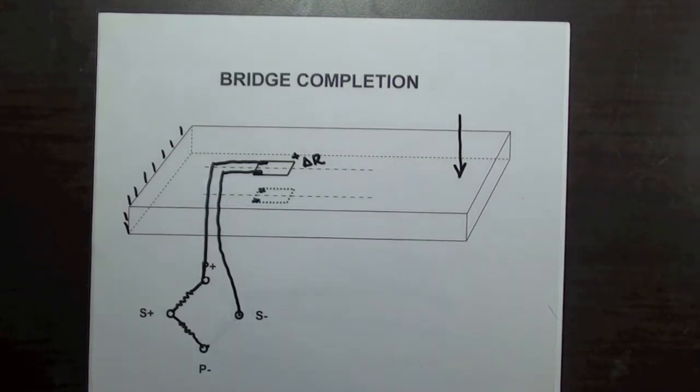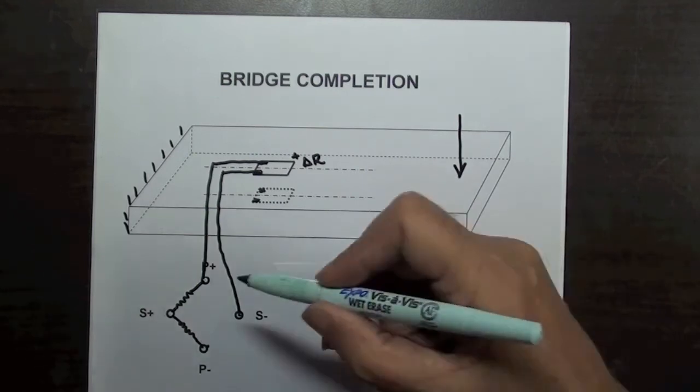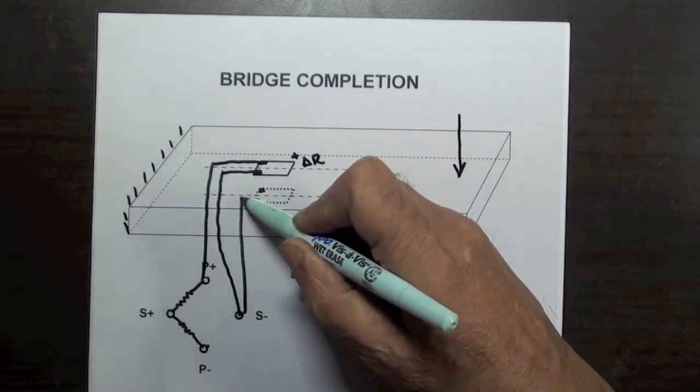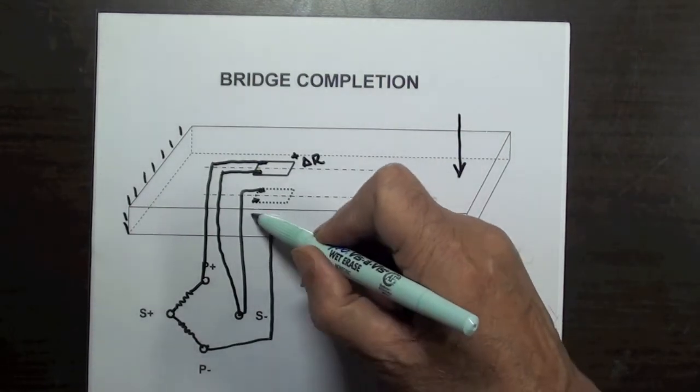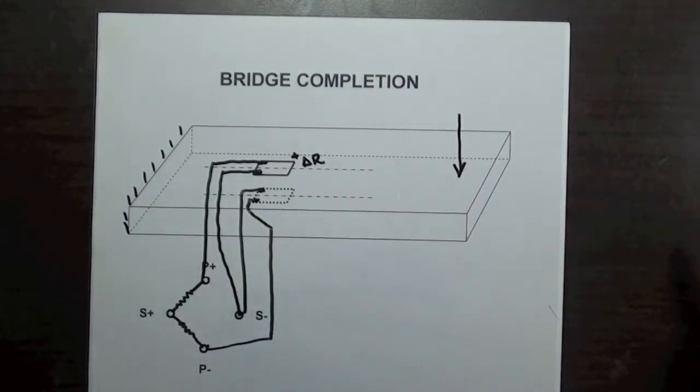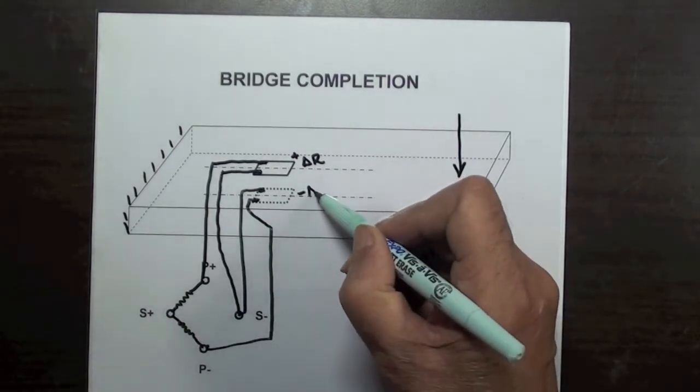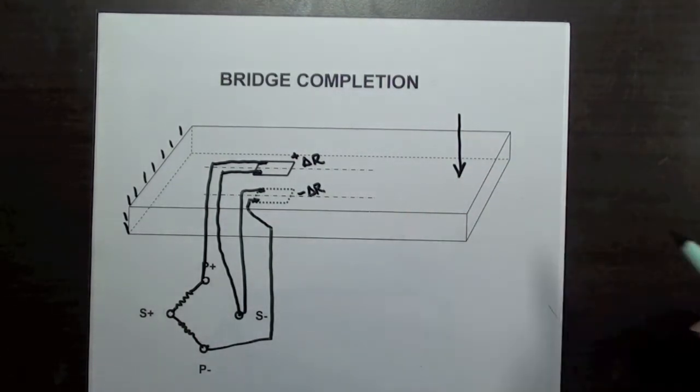On the same beam, if we have a second strain gauge bonded to the bottom surface at the same cross section, then the second gauge can be connected to the adjacent arm of the bridge. In this case, the bottom gauge will change resistance by minus delta R and the output of the bridge will be doubled.